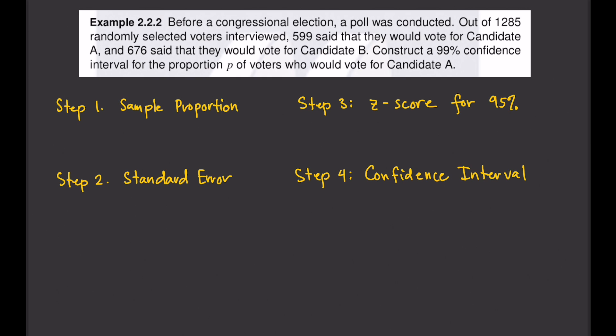Let's have another example. Before a congressional election, a poll was conducted. Out of 1,285 randomly selected voters interviewed, 599 said they would vote for candidate A and 676 said they would vote for candidate B. Construct a 99% confidence interval for the proportion of voters who would vote for candidate A.